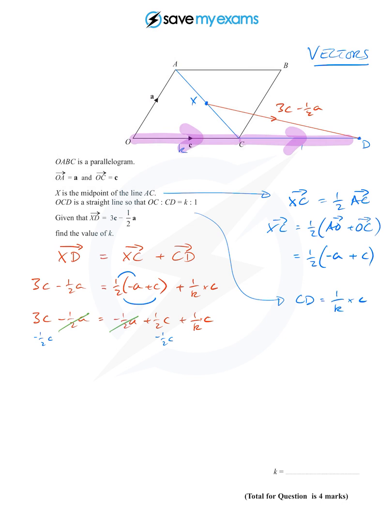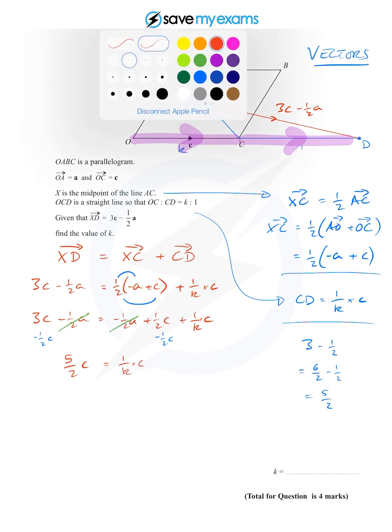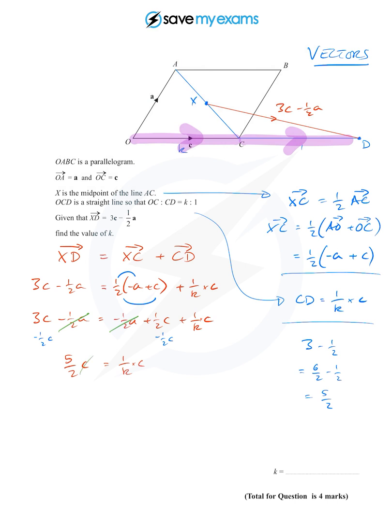I'm going to do this in fractions. Three minus a half is six over two minus one over two, which is five over two. So I've got on the left five over two c is equal to—well, the only thing I've got left on the right—one over k times c. And with the green canceling pen, I can see that the c's will cancel.